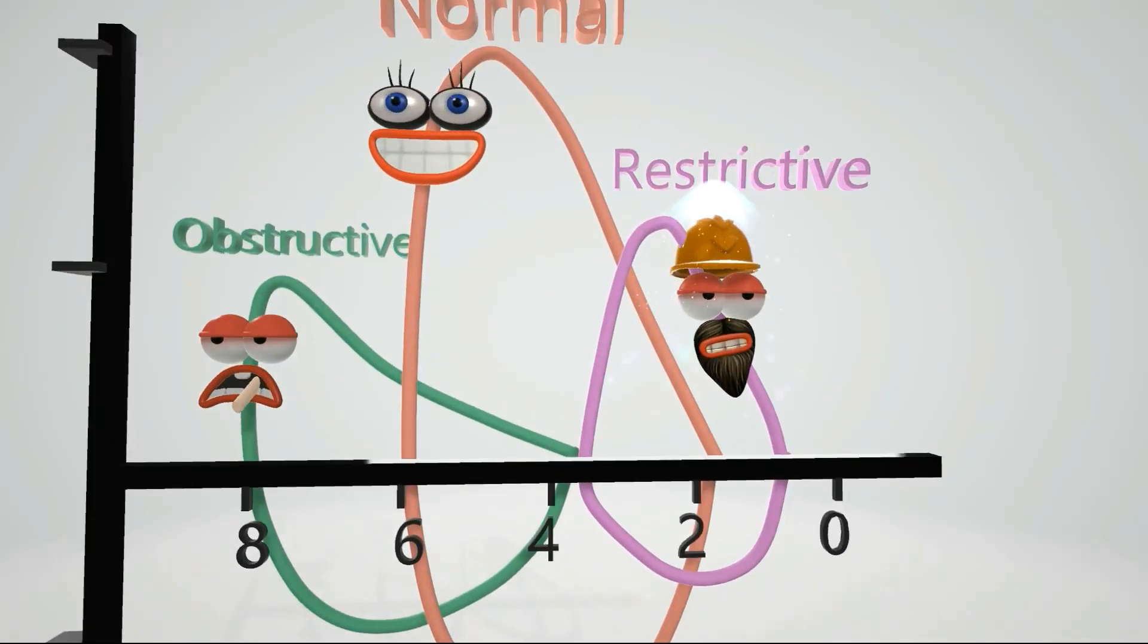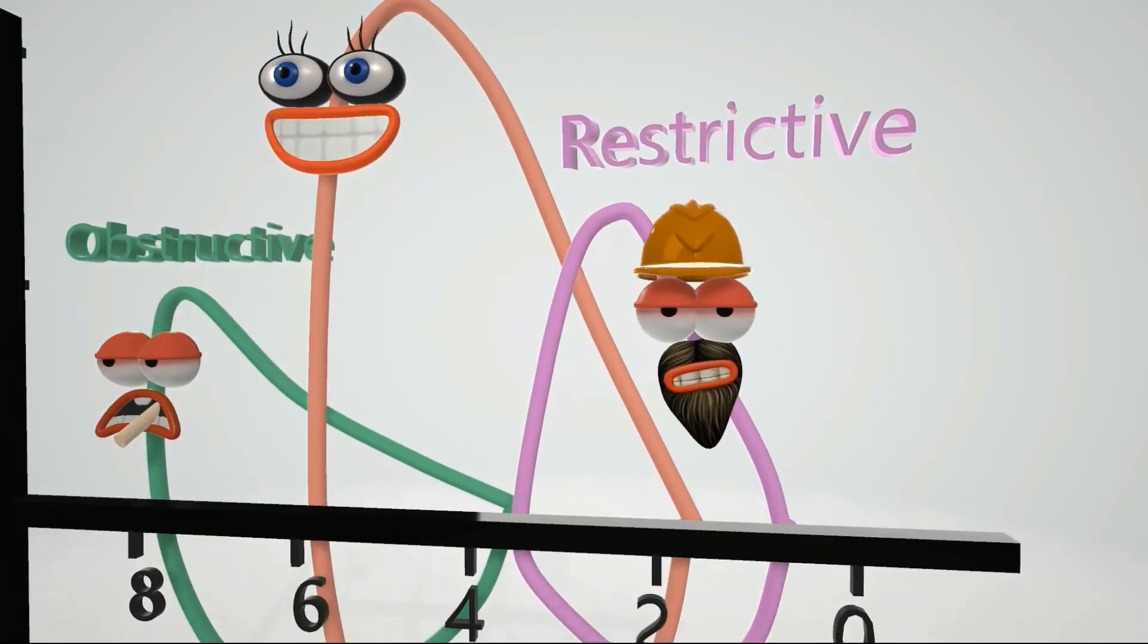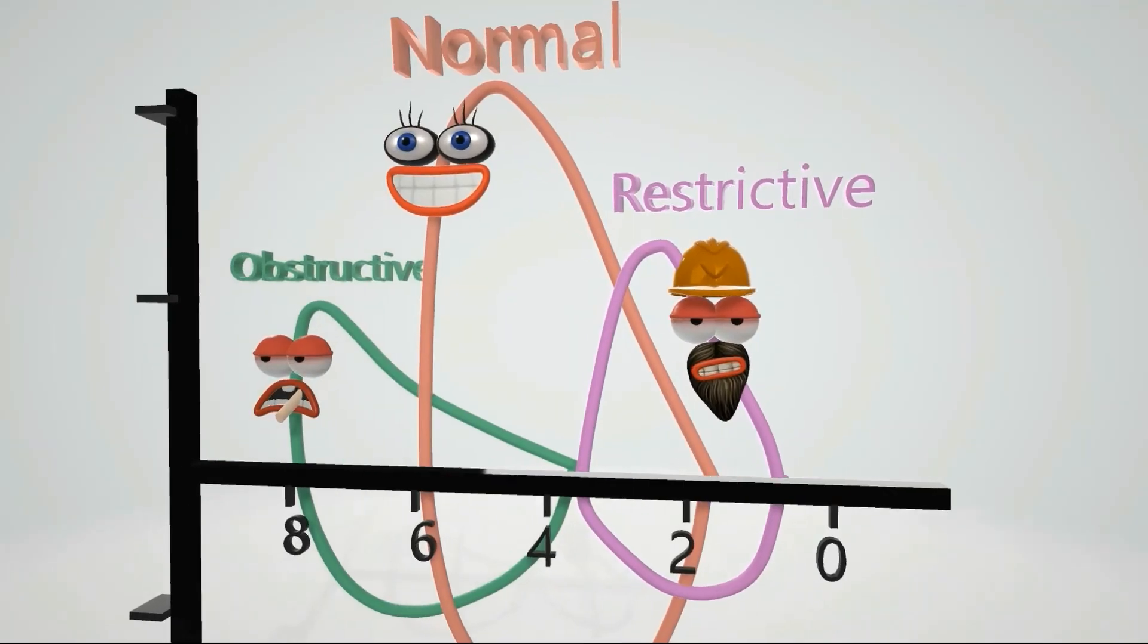Here we note restrictive lung disease. This includes lots of things, including pneumoconiosis, berylliosis, silicosis, associated with workers in manufacturing and mining. Thus we have this worker to remind us of that. The curve shifts to the right.